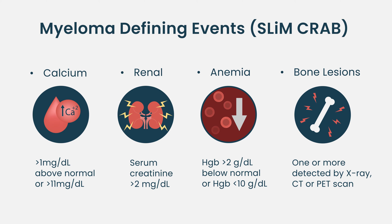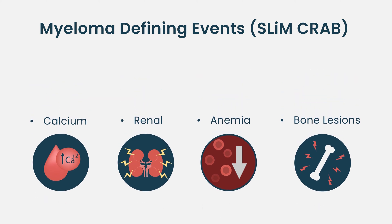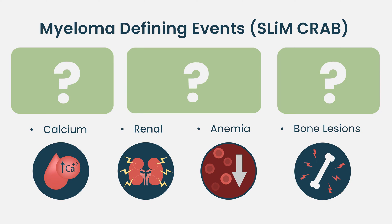Experts then realized there were other features indicating that patients actually require treatment. When they looked at the data, they came up with three additional features. With seven features now, the acronym CRAB no longer fully applied, so these seven features became known as myeloma-defining events.